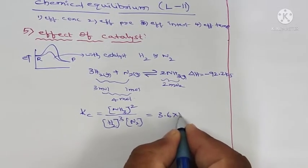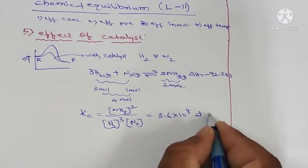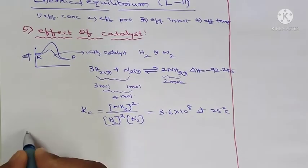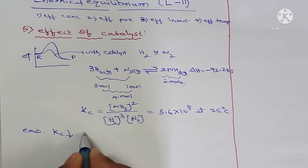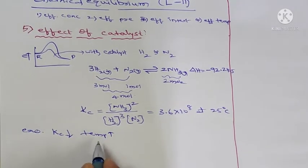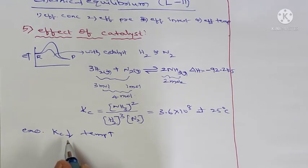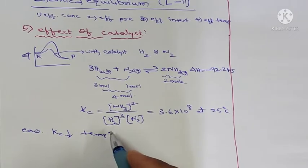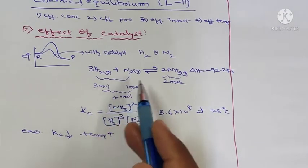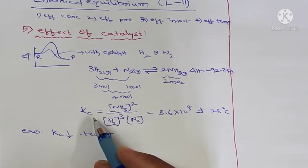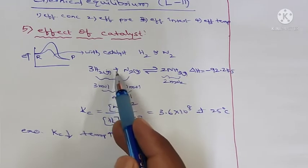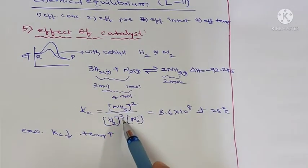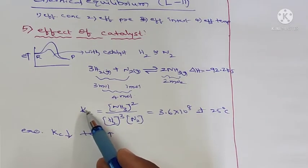The equilibrium constant Kc equals [NH3]² divided by [H2]³[N2], and its value is 3.6 × 10⁸ at room temperature 25°C. In exothermic reactions, the equilibrium constant Kc decreases with increase in temperature. With increase in temperature, the backward direction is favorable, meaning the concentration of reactants increases. If the concentration of reactants increases, the denominator value increases and the Kc value decreases.